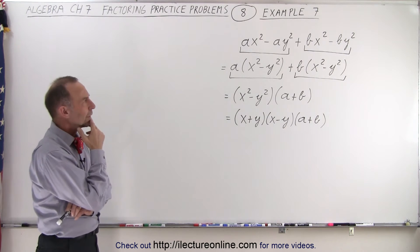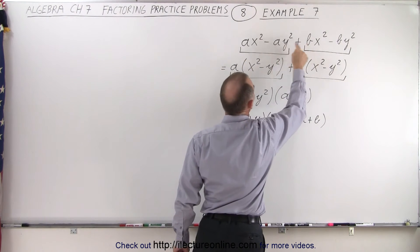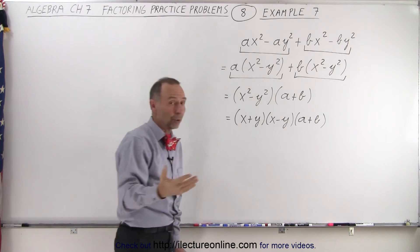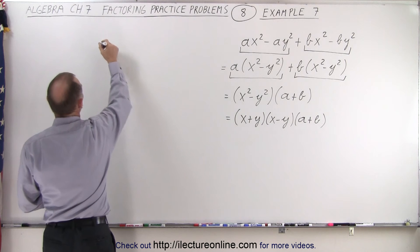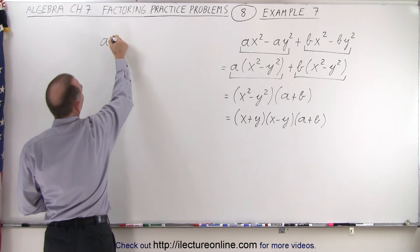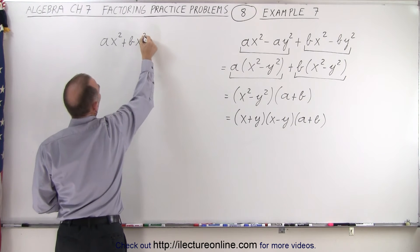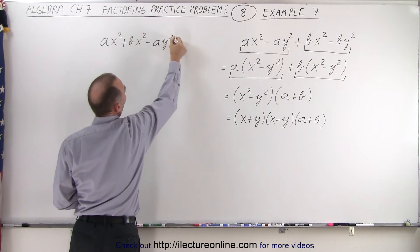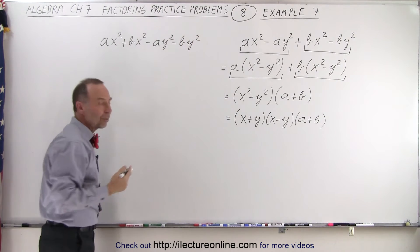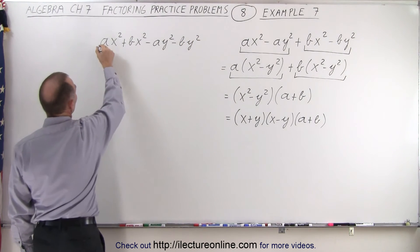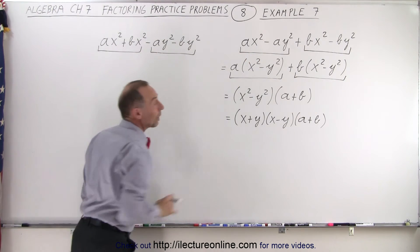Now, you might decide: what if I had grouped them differently? What if I had grouped the first and the third term and the second and the fourth term? Would that work, and will we get the same answer? Let's give it a try. So what if we have A x squared plus B x squared minus A y squared minus B y squared? Let's see what happens when we group the first two together and the last two together — notice that's a different grouping than before.